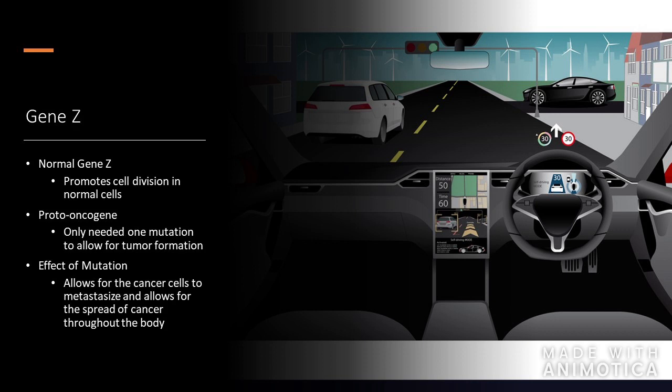For gene Z, normally this would promote cell division in healthy cells. I think it's a proto-oncogene because, like gene Y, only one mutation was needed for a tumor to form. This mutation allows for the cancer cells to metastasize and spread throughout the body. I think of this as a self-driving car that gets onto the interstate and just floors it.